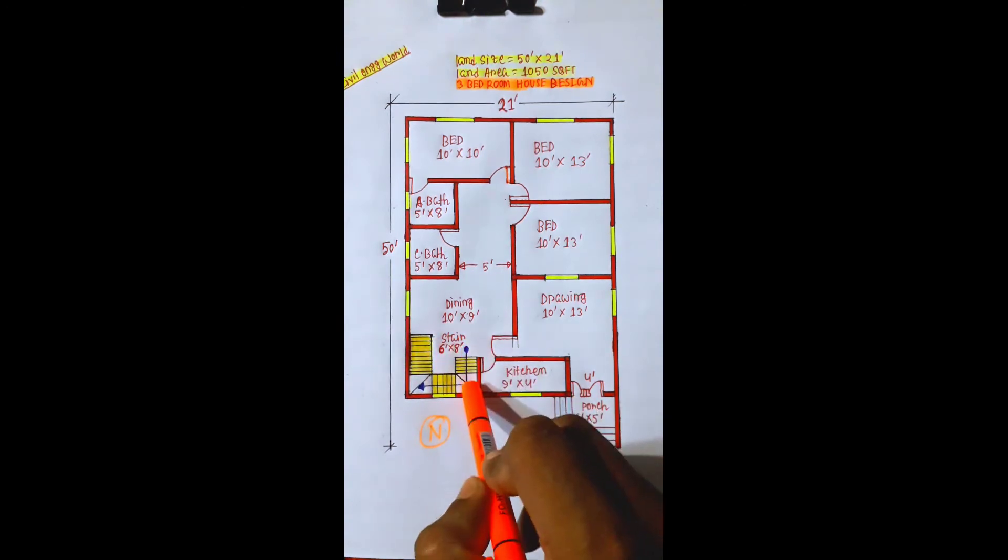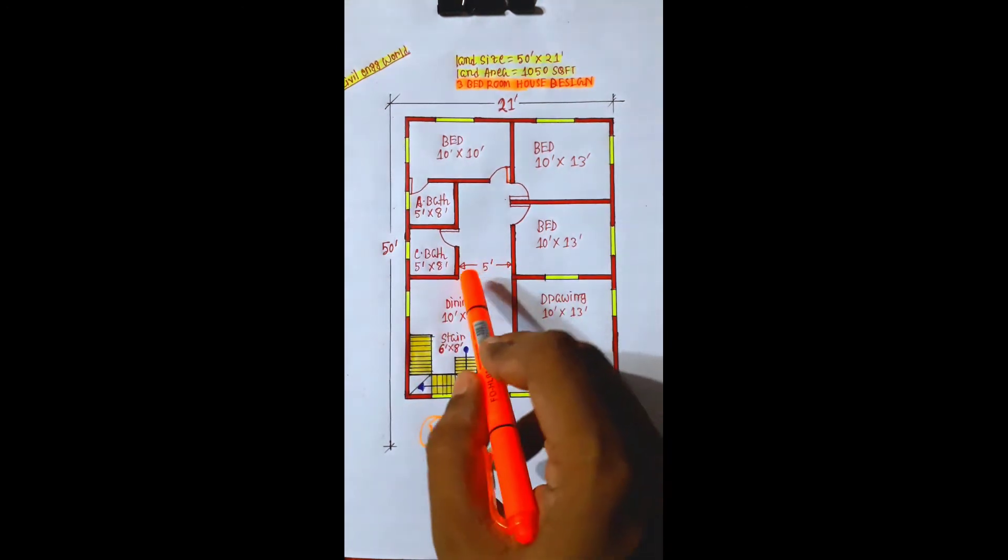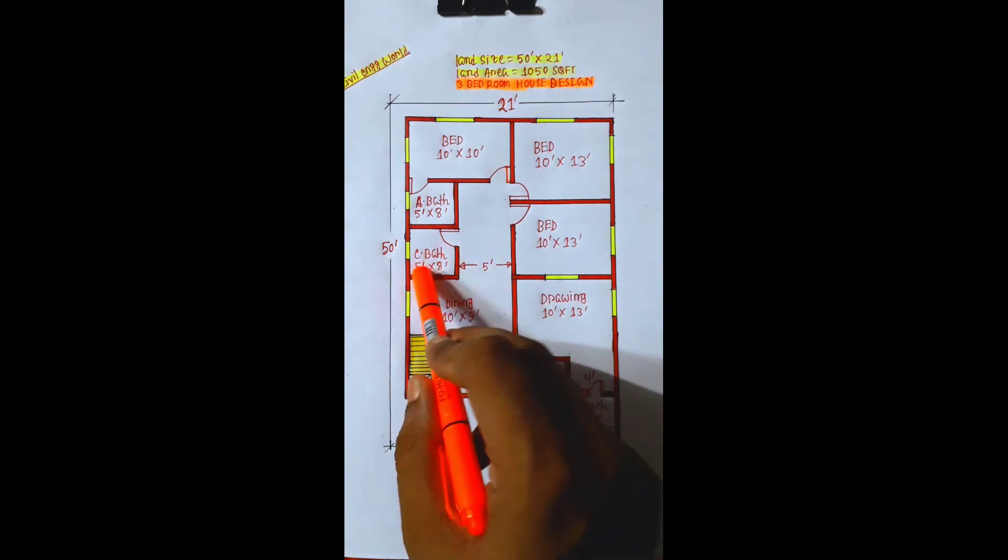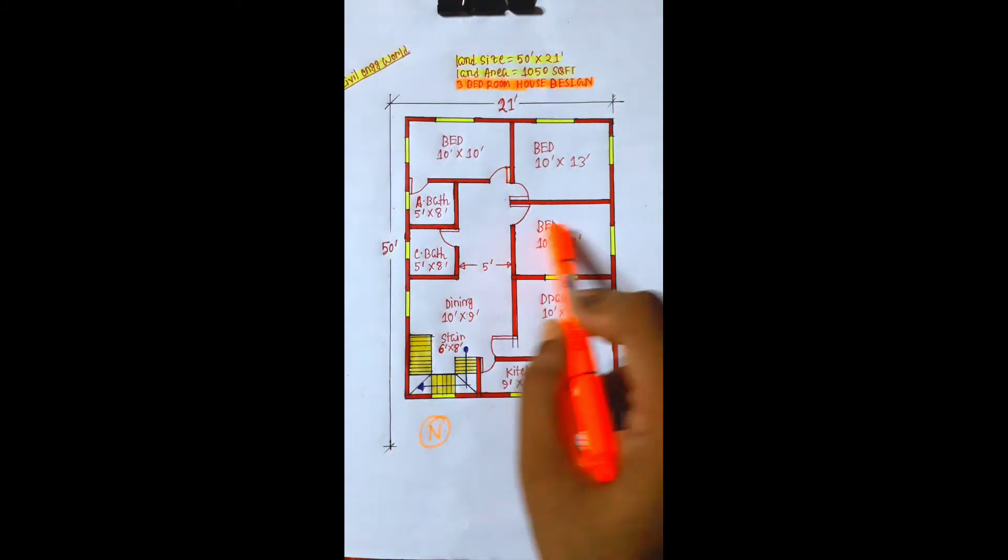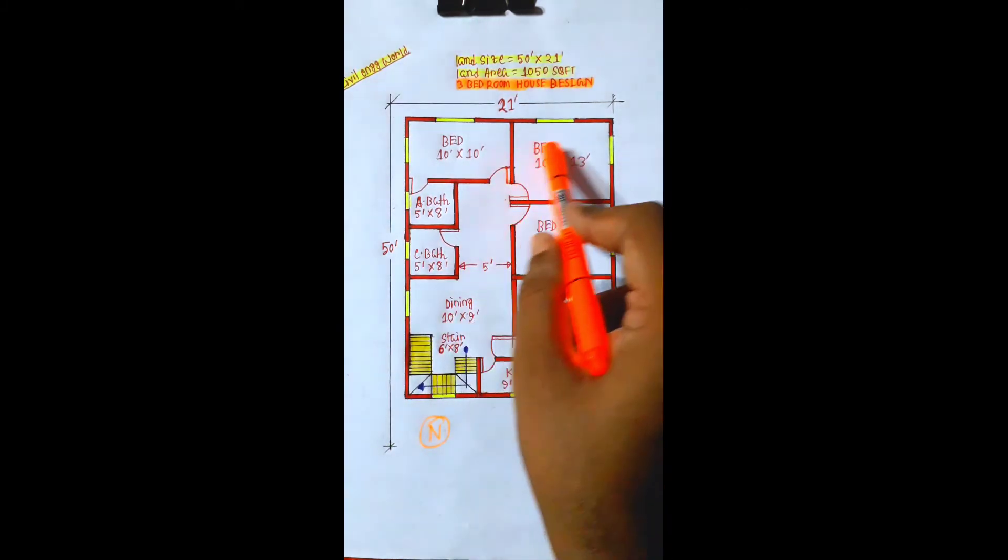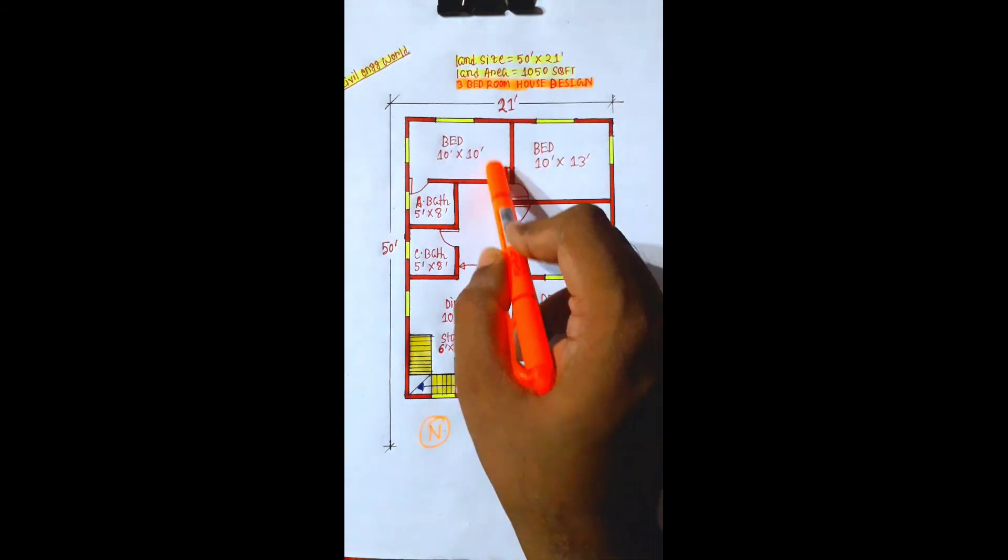The stair is 10 feet by 8 feet. The toilet is 10 feet by 8 feet. The bedroom is 10 feet by 13 feet, and this one is 10 feet by 8 feet.